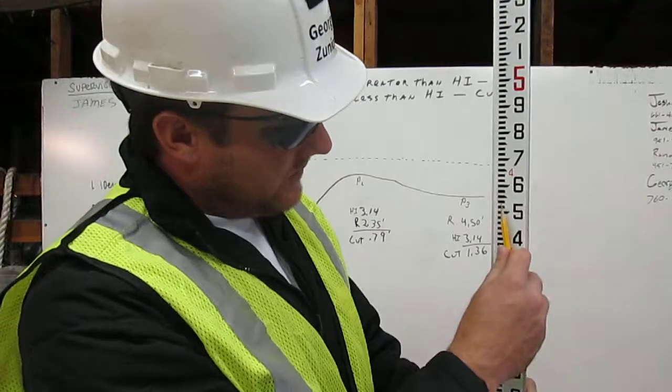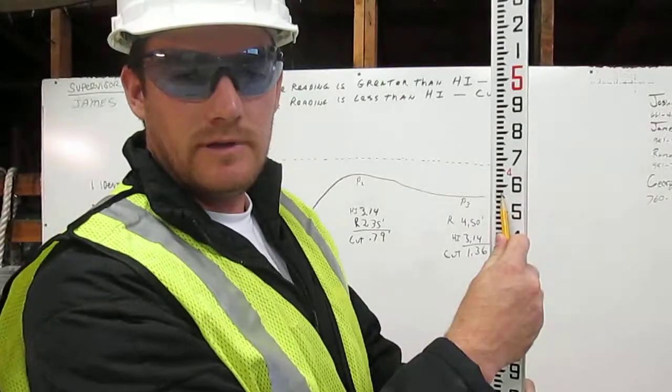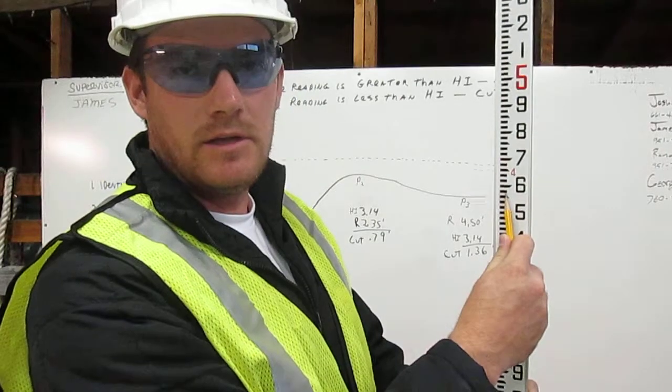One, two, three, four, five, six, seven. This is 4.57 feet on an engineer's ruler. Thank you.